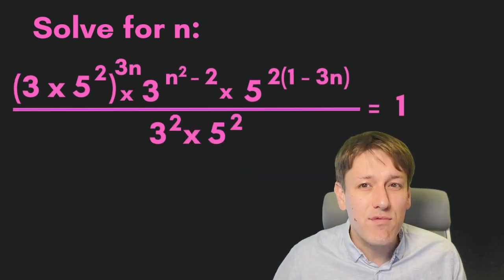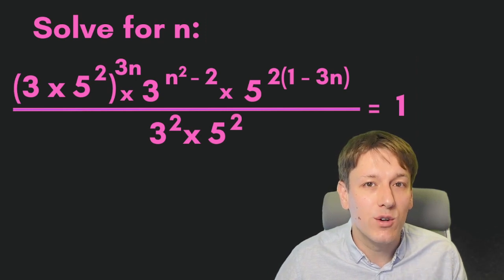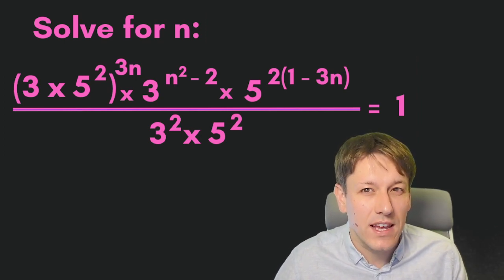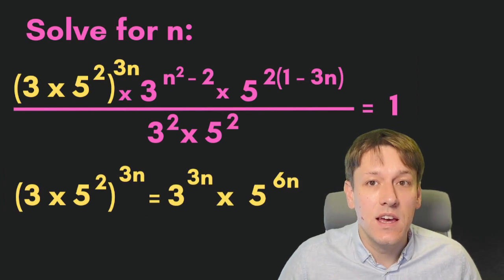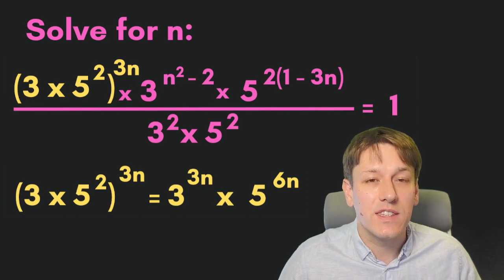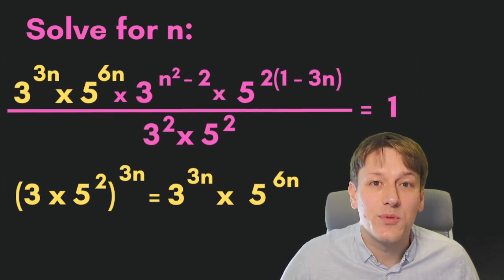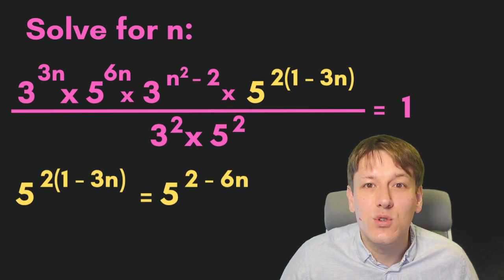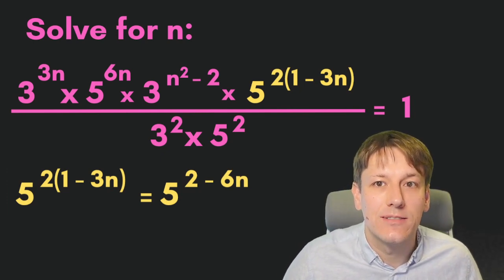Now we can see that everything on the left hand side is either a power of 3 or 5, and that's going to be really helpful. Next we can focus on this term and write 3 times 5 squared to the 3n as 3 to the 3n times 5 to the 6n using the rules of indices. So we can replace that one as well, and we just multiply out the brackets 2(1 minus 3n) to get 2 minus 6n.